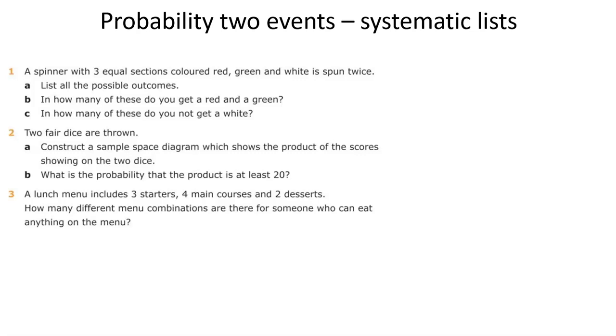Hello, and this time I'm talking about probability where several things happen, either two events or possibly even more, and looking at working those out by working out a list of all the possible outcomes.